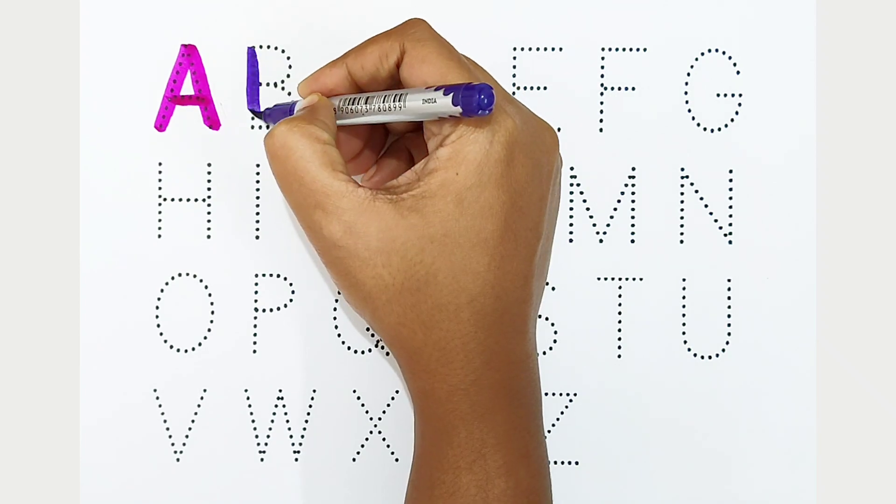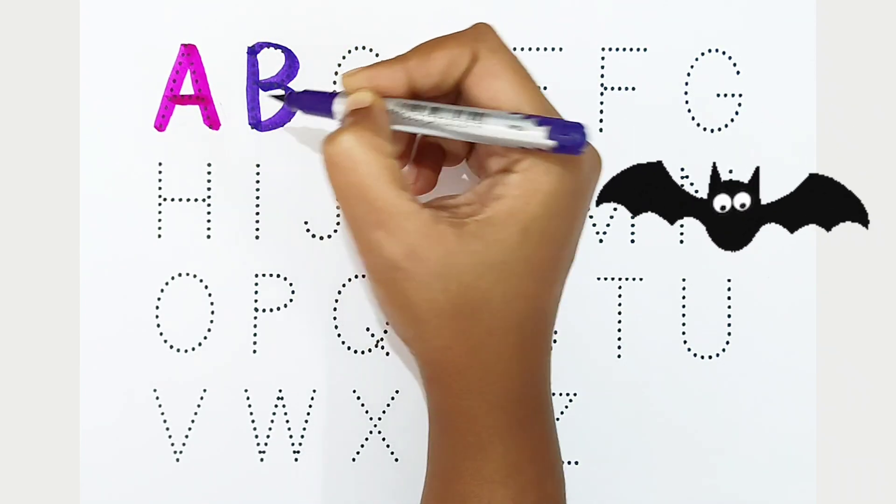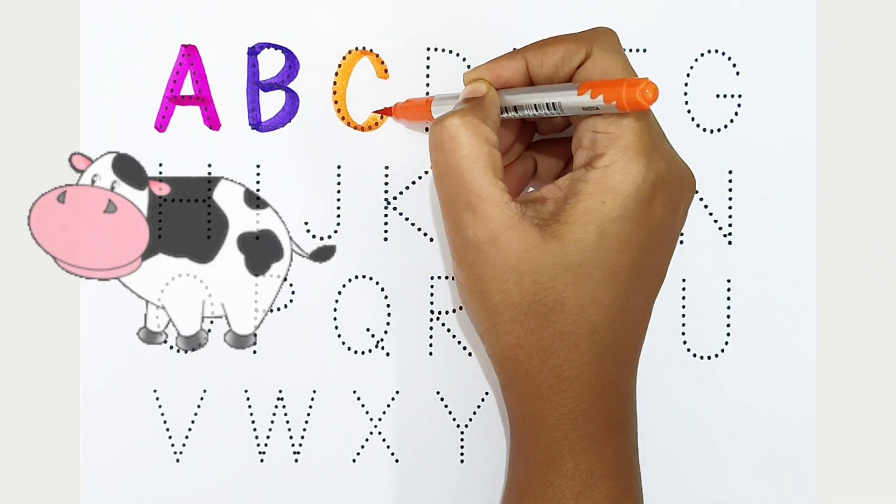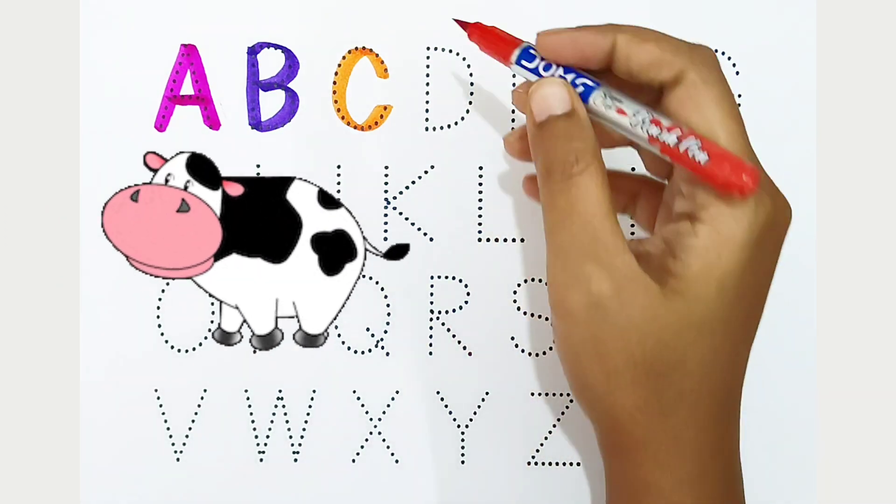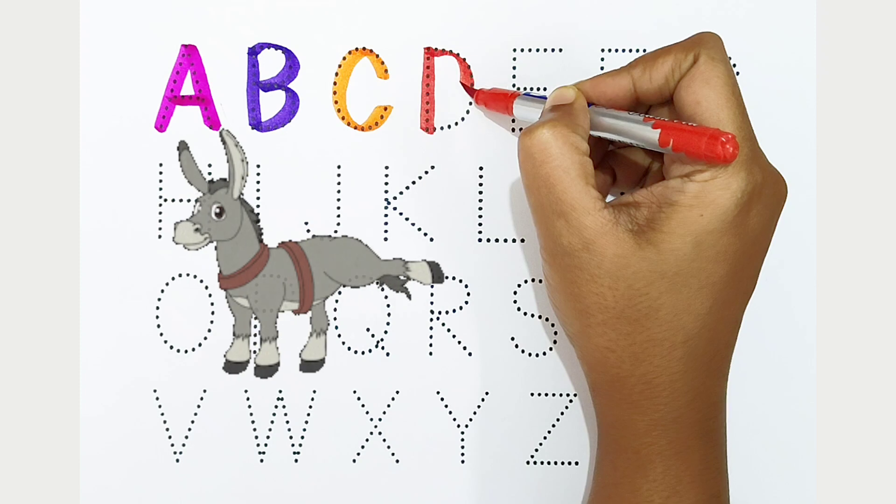B is for bat. C - orange color. C is for cow. D - red color. D is for donkey.